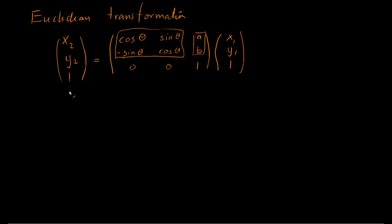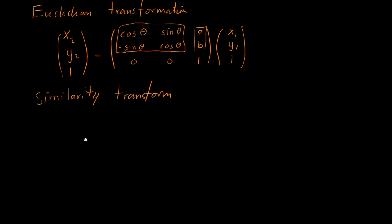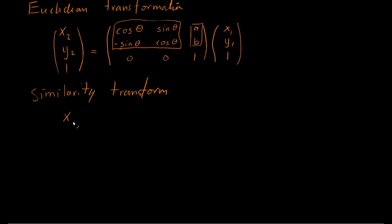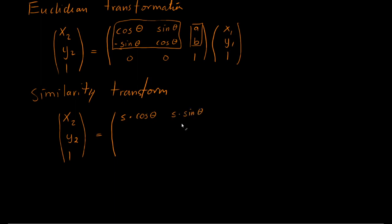We can also include the similarity transform, which is more or less the same as the Euclidean transform with one change: all the elements in the rotation part of the transformation matrix are multiplied with a scaling factor S. So we have S times cosine theta, S times sine theta, minus S times sine theta, and S times cosine theta — plus the same displacement values as before.